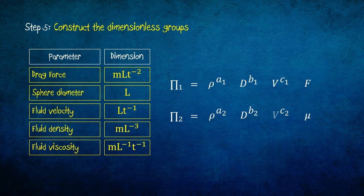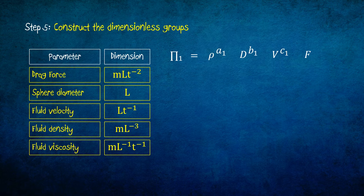Let's solve for pi 1. Pi 1 is a dimensionless group. We can say that its dimension is m power 0, l power 0, and t power 0.